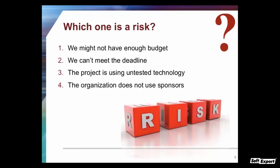Number one is a risk: 'we might not have enough budget.' Why? Because risks are items that may happen. We might not have enough budget — we don't know, but we might not. That's a risk. Numbers three and four — 'the project is using untested technology' and 'the organization does not use sponsors' — are written in present tense. They're statements. They might lead to risks, but they're not risks themselves. Risks always begin with something that might happen, could happen, or is probable.